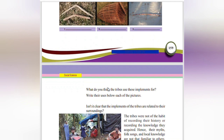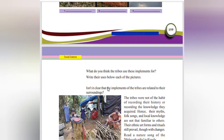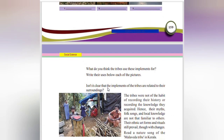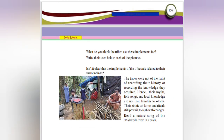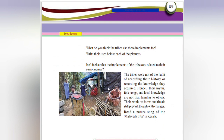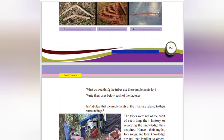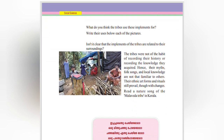Observe the following pictures — what do you think the tribes use these implements for? Write the uses below each of the pictures. It is clear that the implements of the tribe are related to their surroundings.